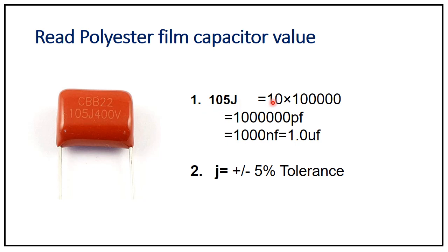The final value is 10⁶ picofarads, which can also be written as 1,000 nanofarads. Since 1,000 nanofarads equals 1 microfarad, the capacitance value is 1 microfarad. To convert: divide picofarads by 1,000 to get nanofarads, then divide nanofarads by 1,000 to get microfarads.